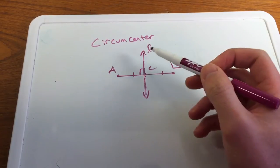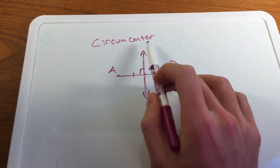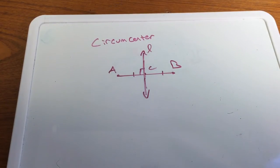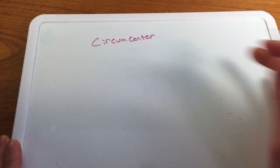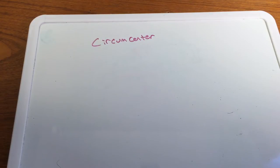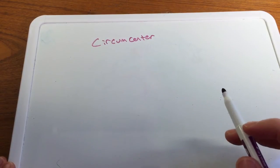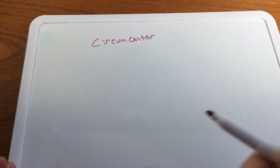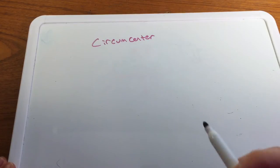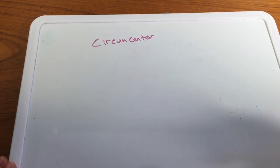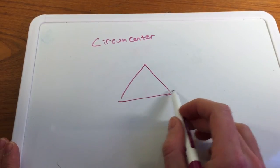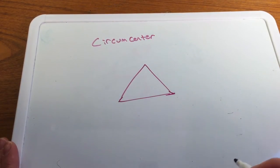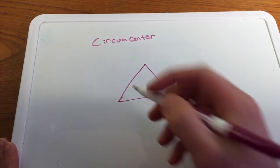The circumcenter is where all three perpendicular bisectors of a triangle meet. There is a special property here: if it's an acute triangle, the circumcenter will be inside the triangle; if it's a right triangle, the circumcenter is on the hypotenuse; and if it's an obtuse triangle, the circumcenter will be outside the triangle. For example, drawing a quick acute triangle — the perpendicular bisector has to cut each side at its midpoint.